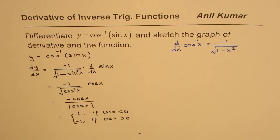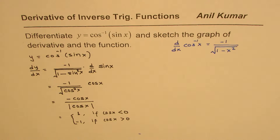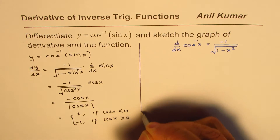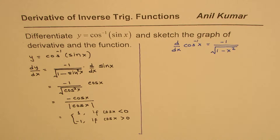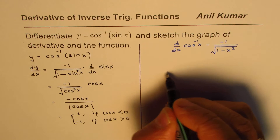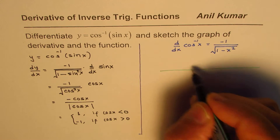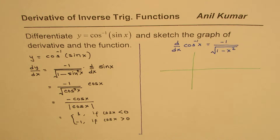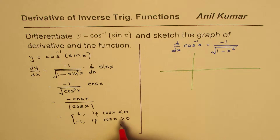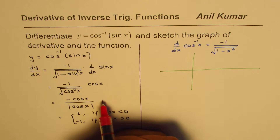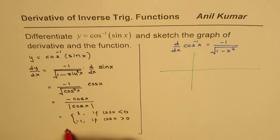At points where cos x equals 0, the derivative is not defined. Based on this, we will sketch the graph of the derivative first and then sketch the graph of the function. What we need to figure out is when cos x is negative and when it is positive. Let me sketch the cosine function to help visualize this.